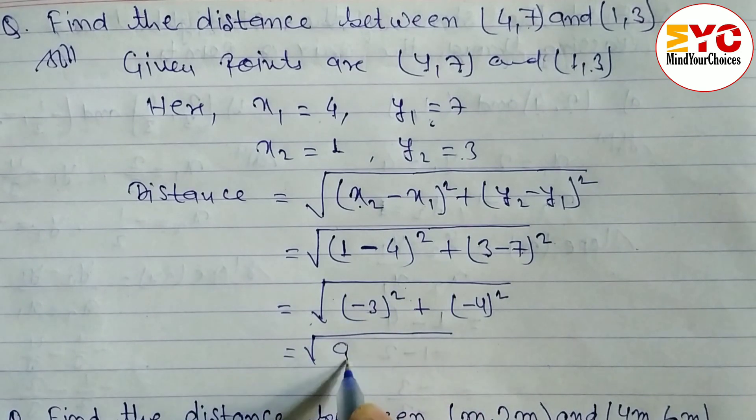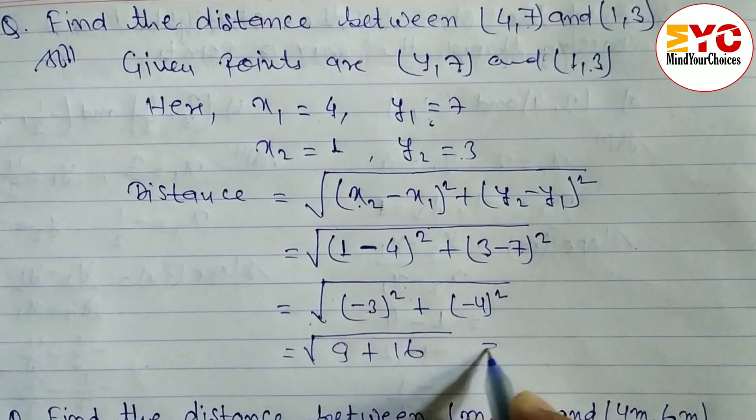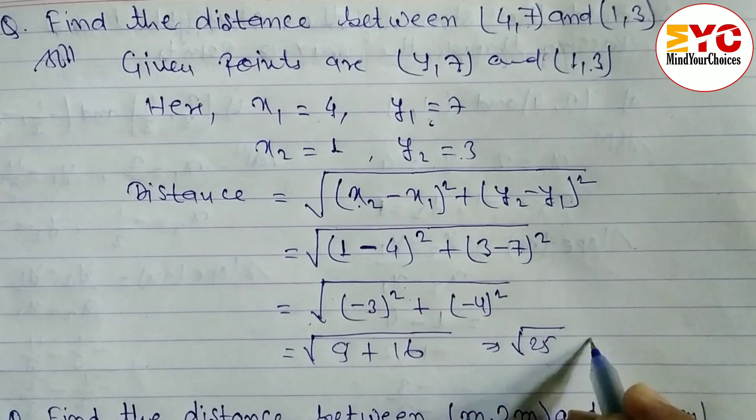(-3)² equals 9, and (-4)² equals 16. When you add these: 9 + 16 = 25. The square root of 25 equals 5 units.